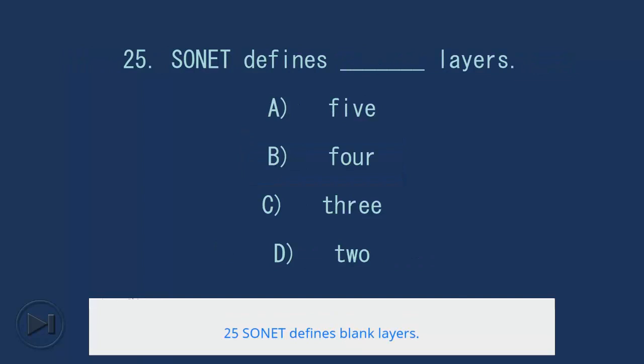25. SONET defines blank layers. A. 5, B. 4, C. 3, D. 2. Answer: B. 4.